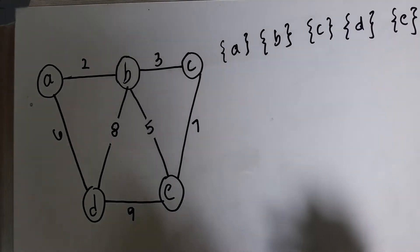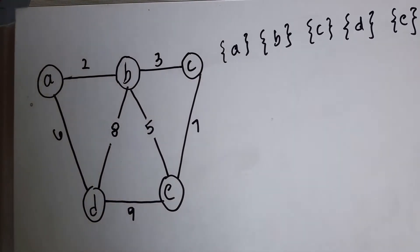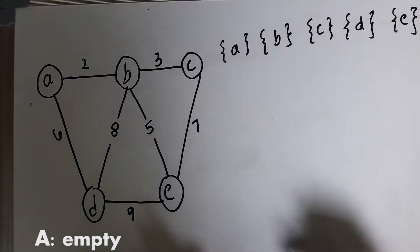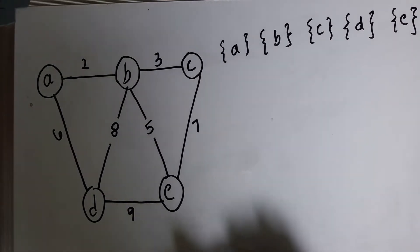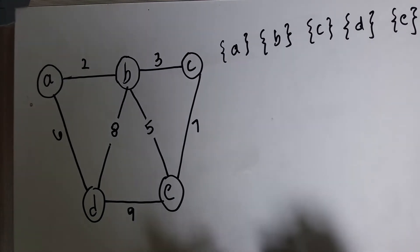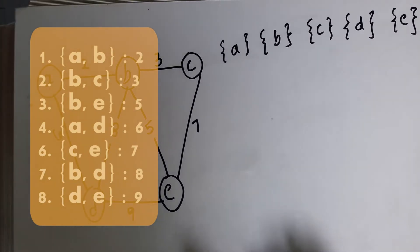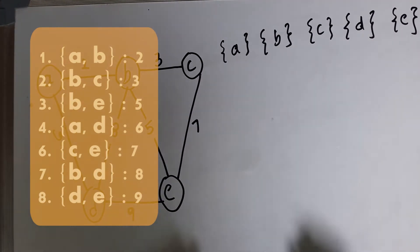Let's represent that data structure as set A. Initially, set A will be empty. The second part of initialization is to sort the edges in non-decreasing order with respect to their weights in the graph. This gives us a sorted list of all edges in non-decreasing order. We are now done with the initialization step.